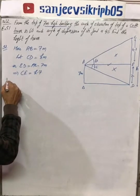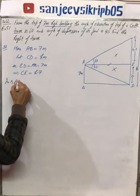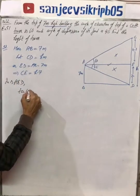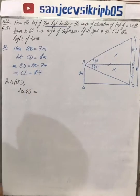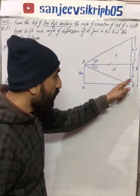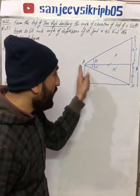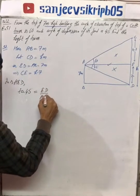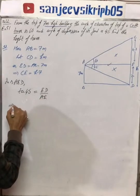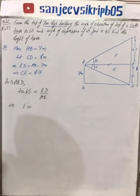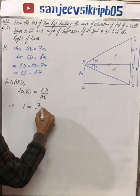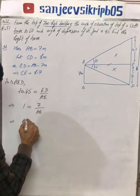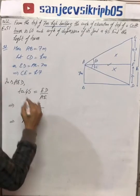Tan 45 degrees means perpendicular ED over base AE. Tan 45 value is 1, so perpendicular over base equals 1. ED is 7, so 7 over AE equals 1, which means AE is 7.